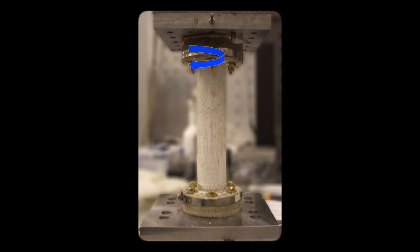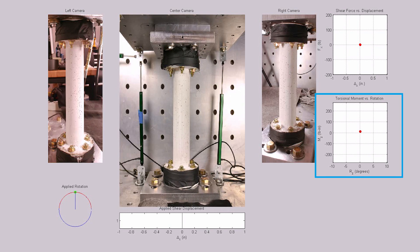In this test, the specimen was subjected only to rotation about its vertical axis in order to induce torsional stress. The applied rotations and resulting torsion can be seen in the lower right graph.